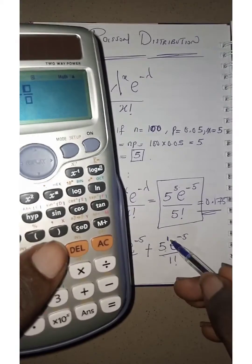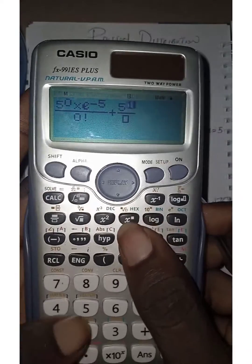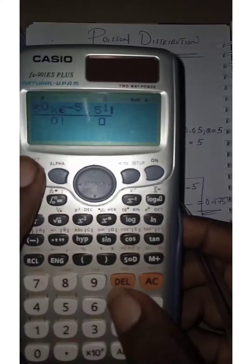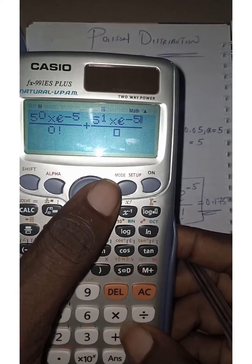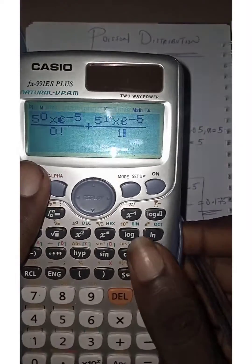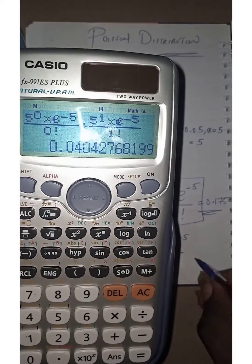Then followed by plus. The other fraction gives us 5 raised to the power of 1. Then you have to come down and press exponential sign. Shift and exponential minus 5, all over 1 factorial. So this is how you keep on doing it until you get a final answer.